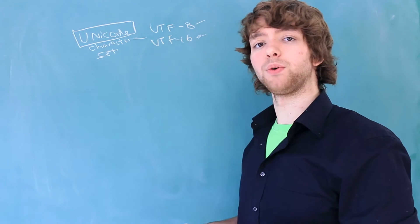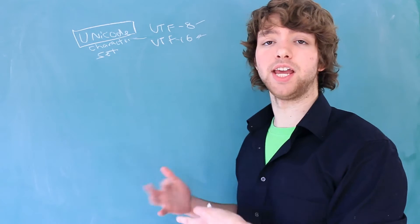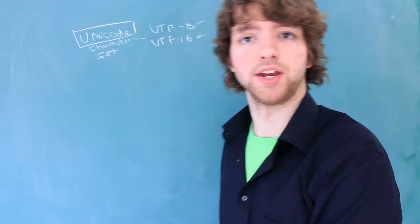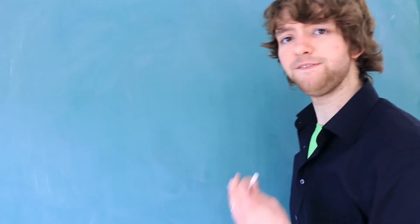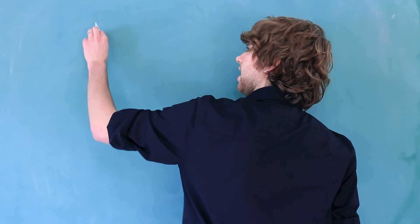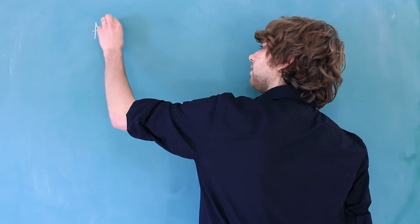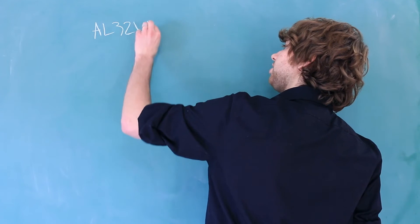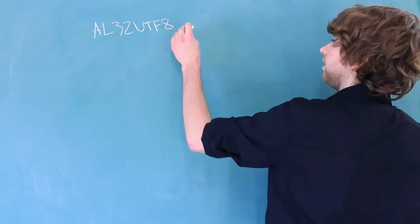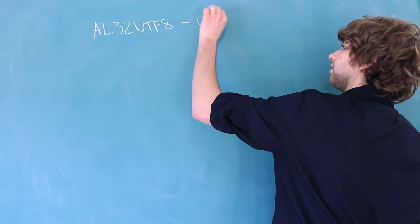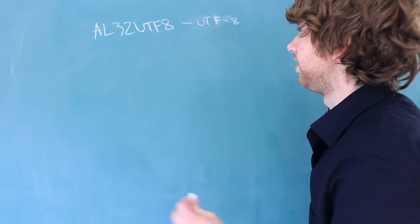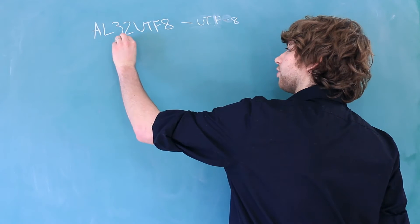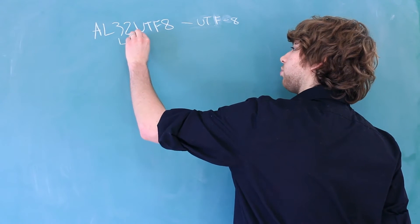We're going to be talking about the very specific names that we need to use in Oracle Database. The first character set is AL32UTF8, and this uses the UTF-8 encoding. In this character set, each character can take up to four bytes.